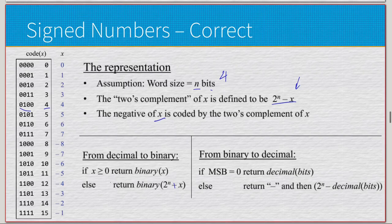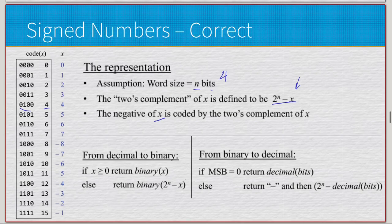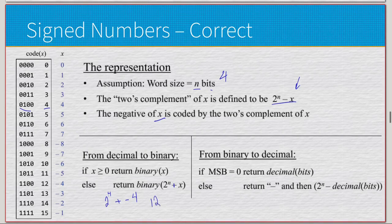So for negative 4: 2 to the n plus negative 4, which is 16 minus 4, equals 12. I look for 12 — that's negative four, giving me 1, 1, 0, 0. That's two's complement. For binary to decimal: if MSB equals zero, I know for sure it's not negative, so I just return the decimal value of the bits. If I have 0, 1, 1, 0, I look it up and it's 6.